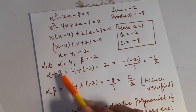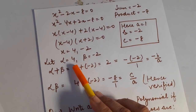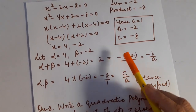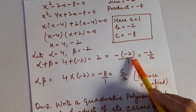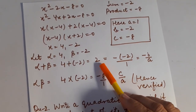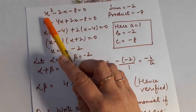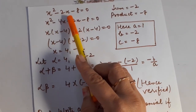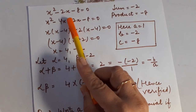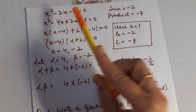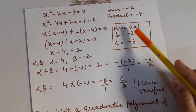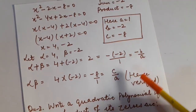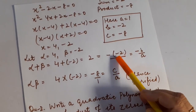I have calculated alpha plus beta: 4 + (−2) = 2. Can I write this 2 as minus of minus 2 upon 1? Yes — this will actually become 2 only. Comparing this quadratic polynomial with its generalized form ax² + bx + c, I get a = 1, b = −2, and c = −8.